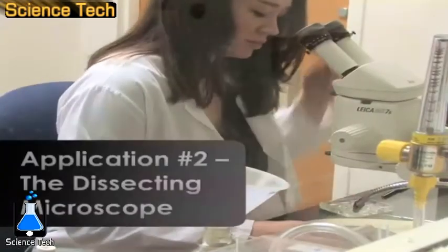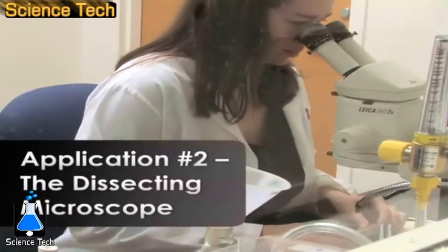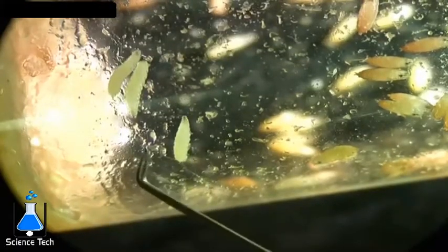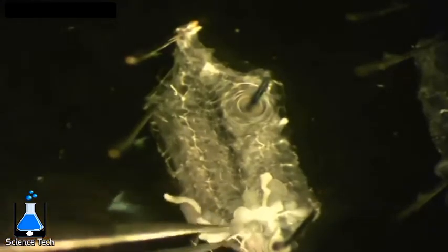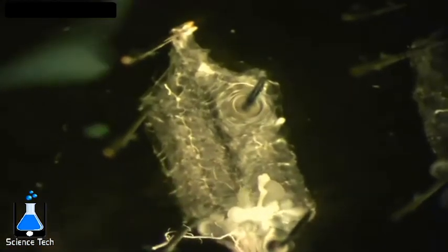In this clip, you see a researcher looking through a dissecting microscope while picking out the perfect drosophila larvae for further dissection in order to expose the body wall muscles so that the neuromuscular junction can be studied.